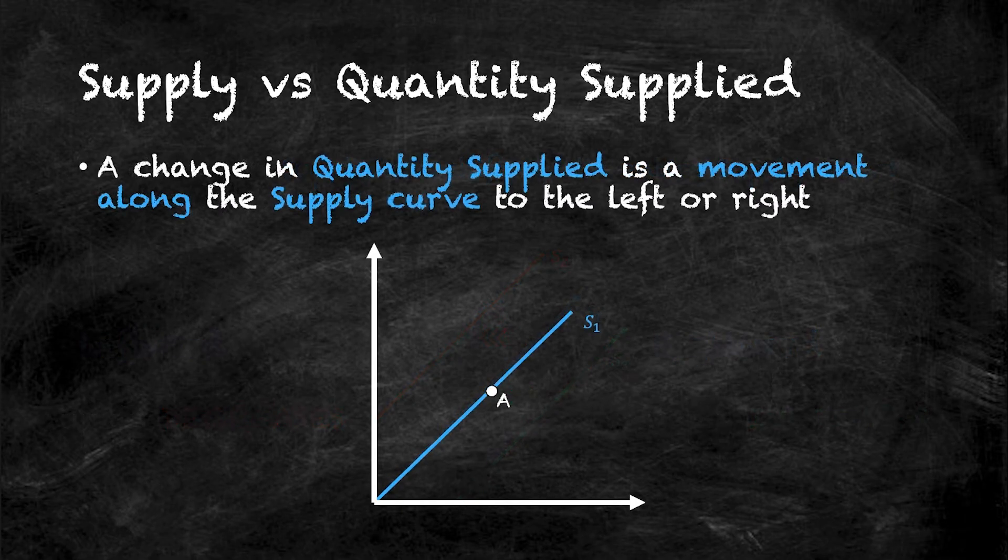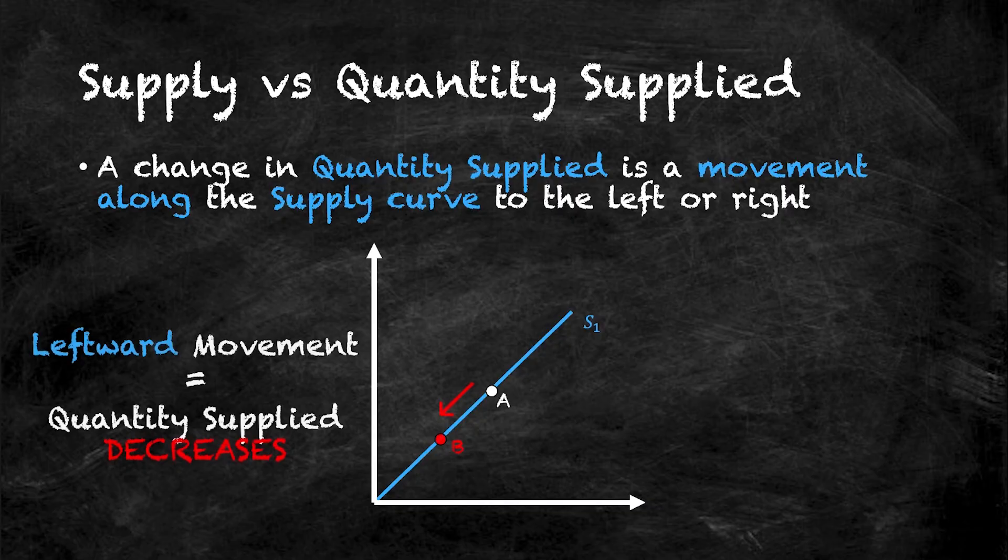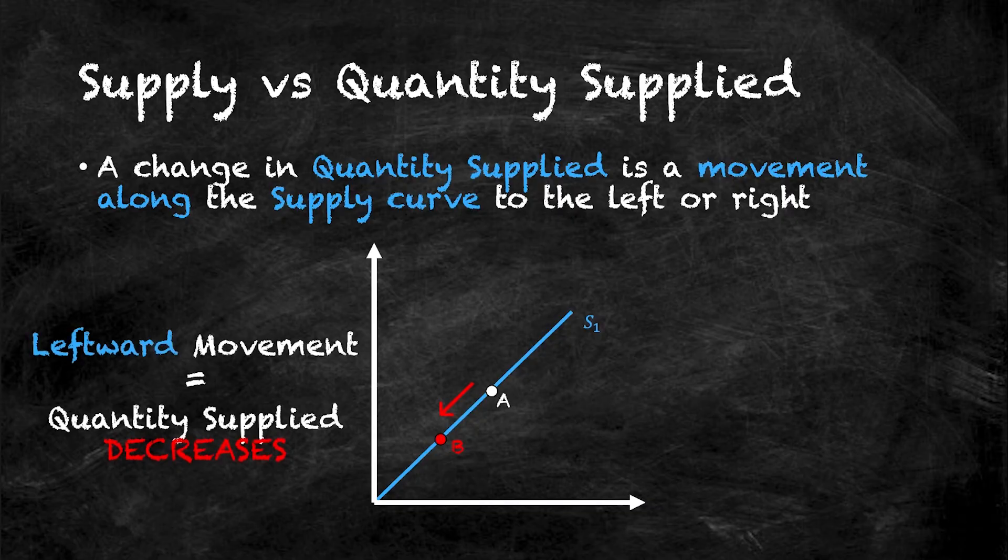However, a change in quantity supplied is a movement along the supply curve to the left or right. So here I have an arbitrary point on my supply curve denoted A. A leftward movement along my S1 supply curve means that quantity supplied has decreased as I go from point A to point B.